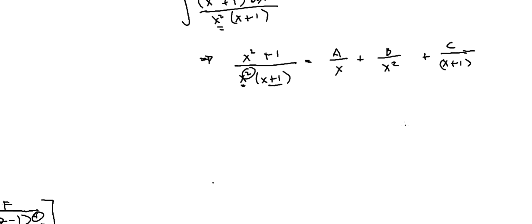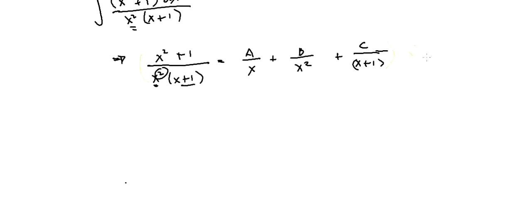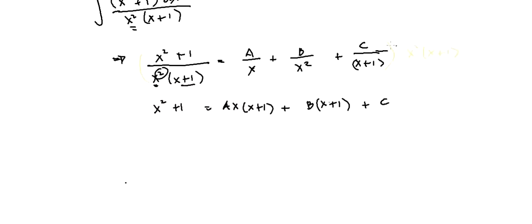Next is clearing of fractions. We will multiply the whole expression by its LCD, which is x squared times x plus 1. After multiplying, terms cancel out and we are left with: x squared plus 1 equals A times x times x plus 1, plus B times x plus 1, plus C times x squared.